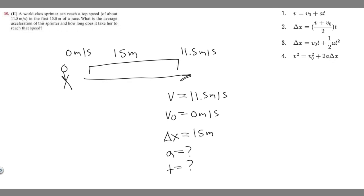So let's go ahead and solve for a. It's going to be v squared so 11.5 squared equals v sub zero which is zero squared and zero squared is just zero so I'm not going to write it, and then two times a times delta x and delta x is 15.